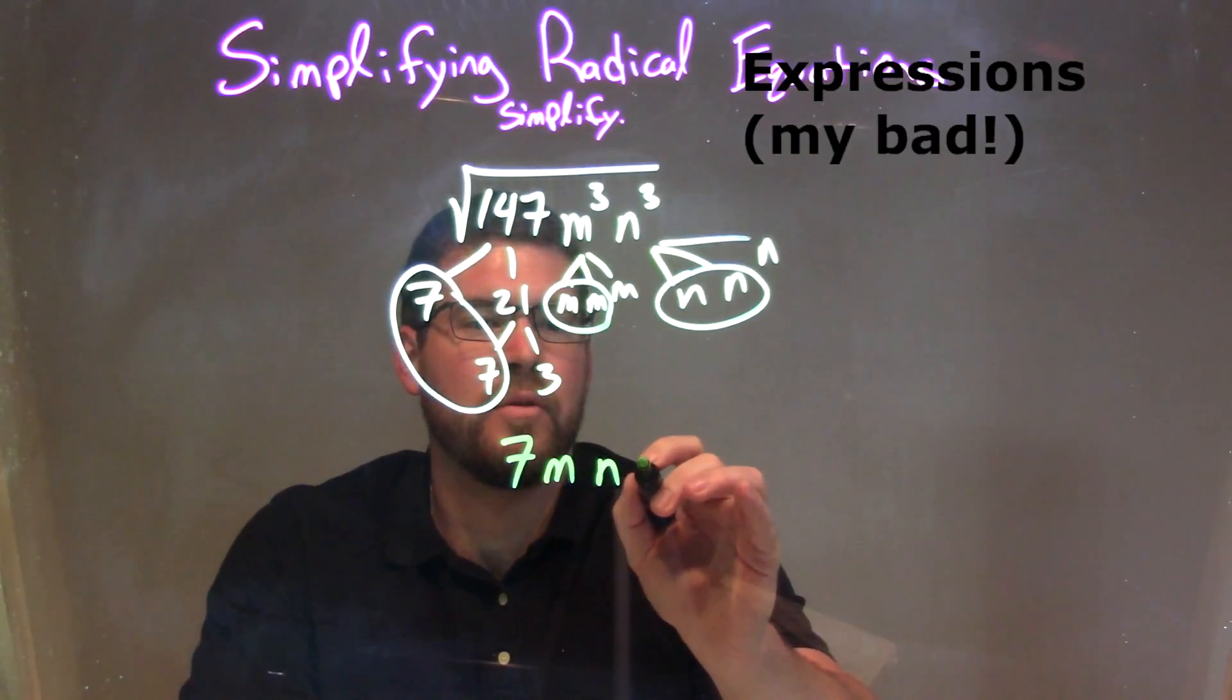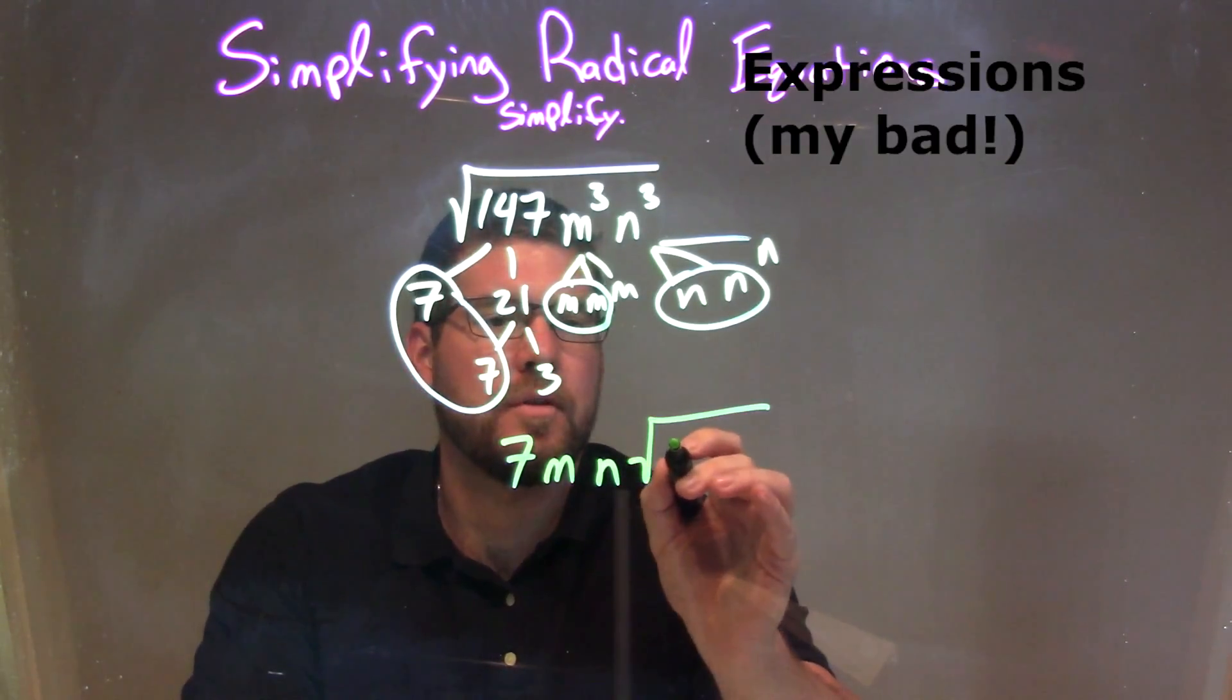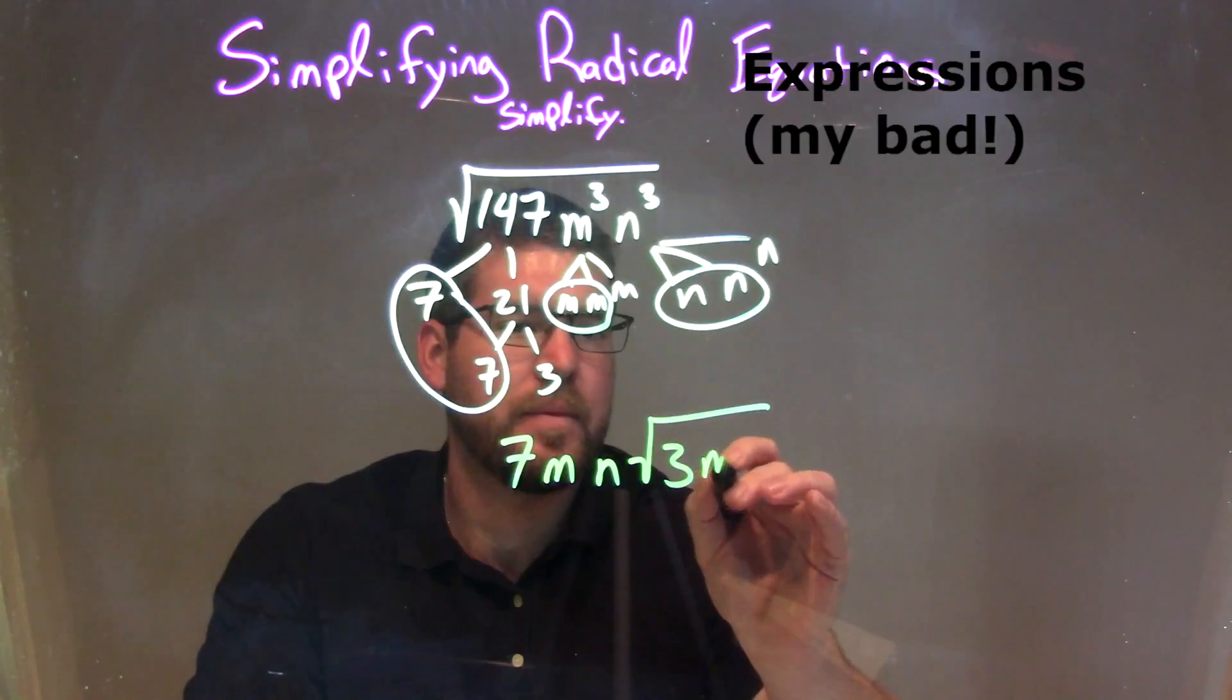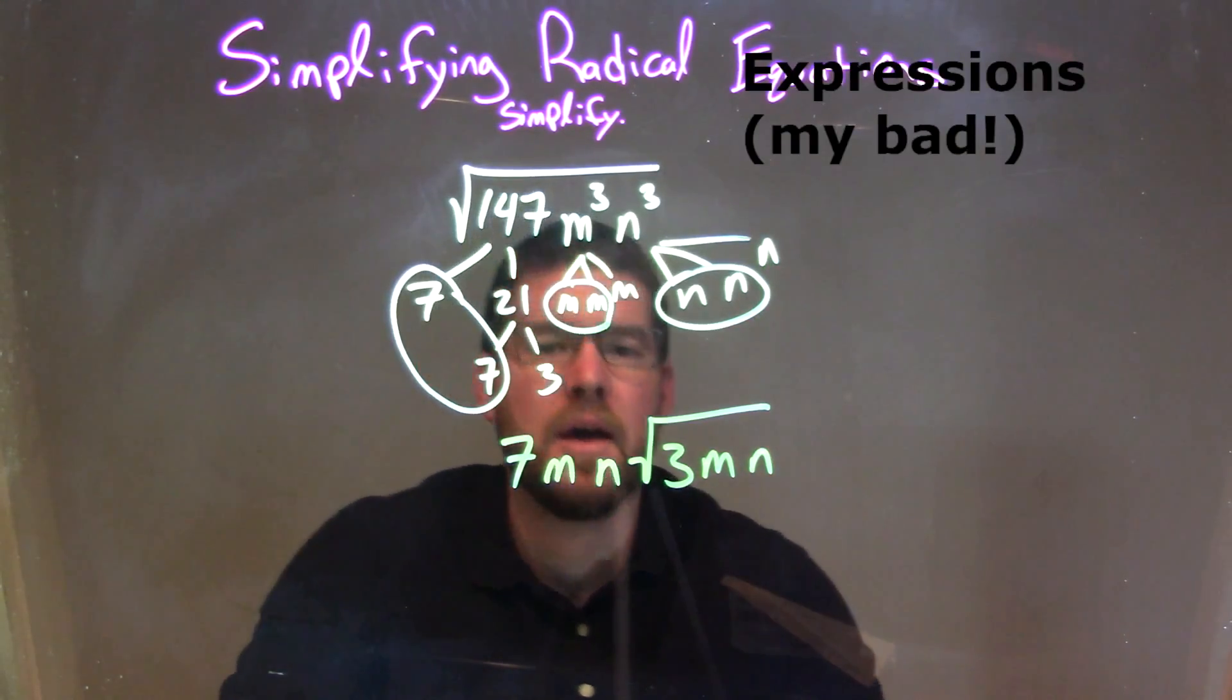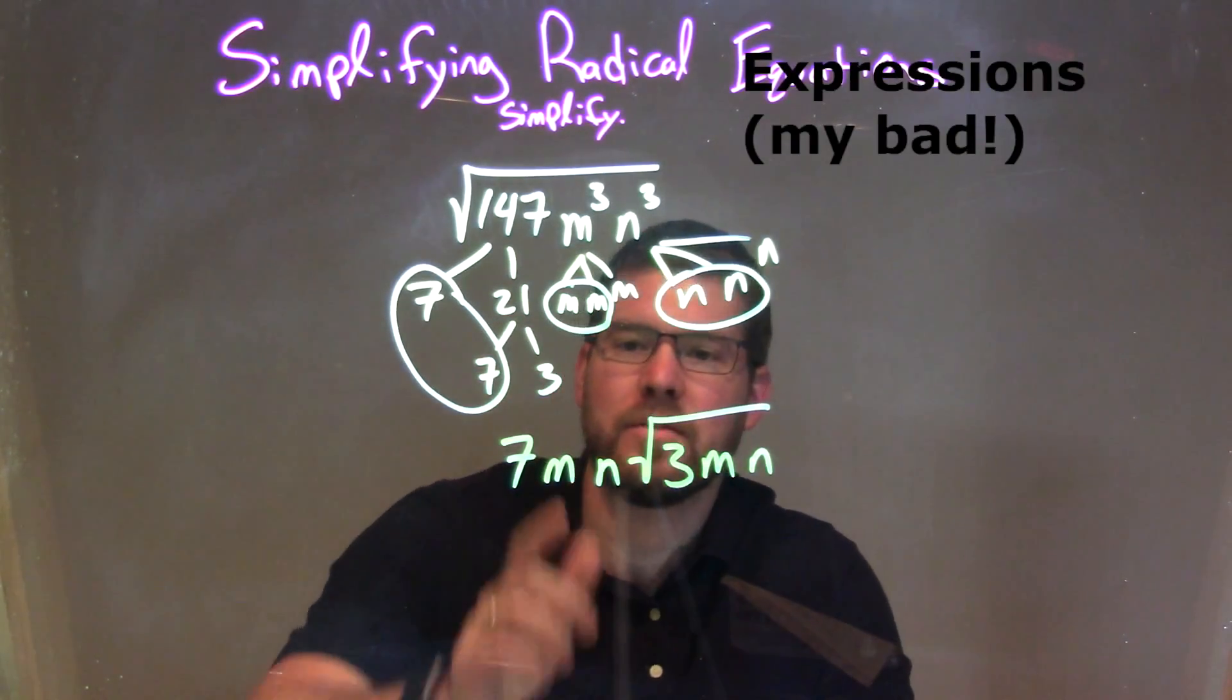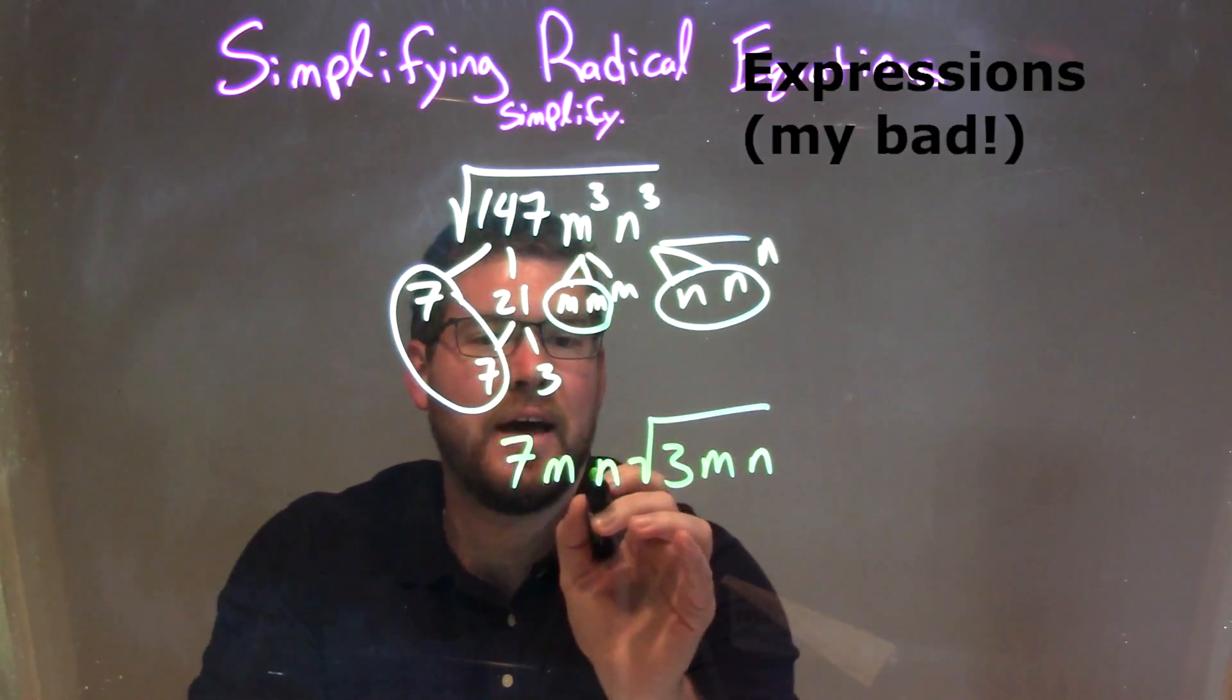Then on the inside of the square root, I'm left all the singles, the 3 times that single m that's right there, times this single n right there. And I like to give myself a little extra space so you can see it's like, you know,